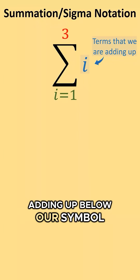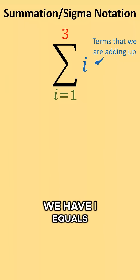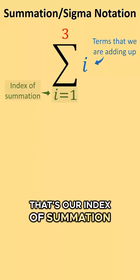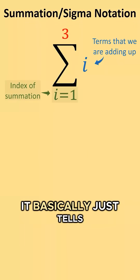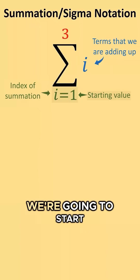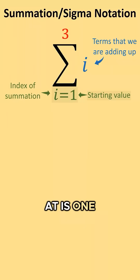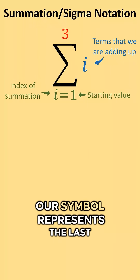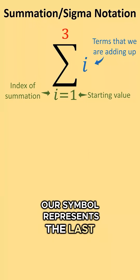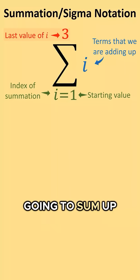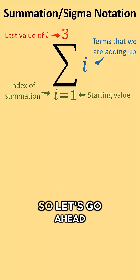Below our symbol we have i equals 1 — that's our index of summation. It basically just tells us that the first value we're going to start at is 1, and the number above our symbol represents the last value of i that we're going to sum up to.